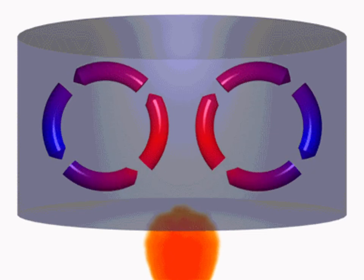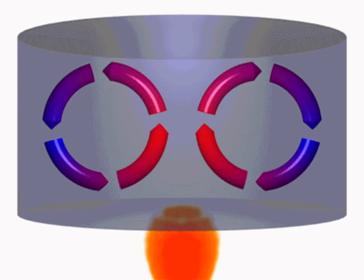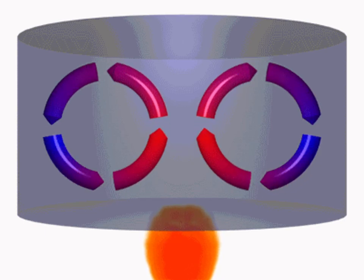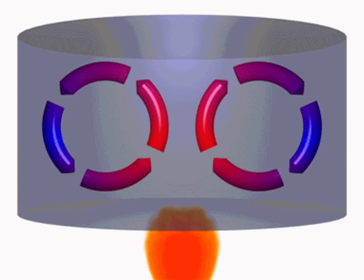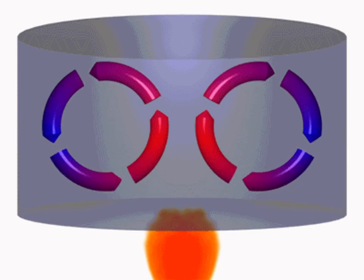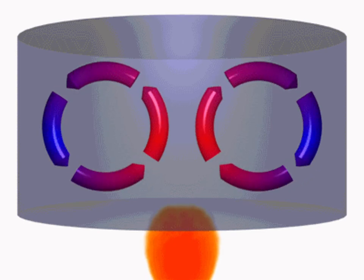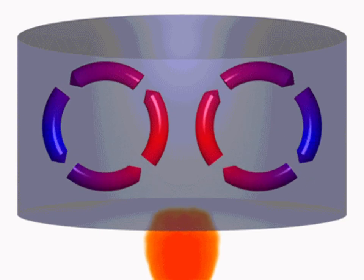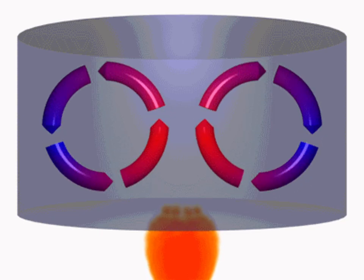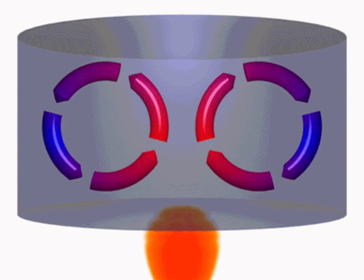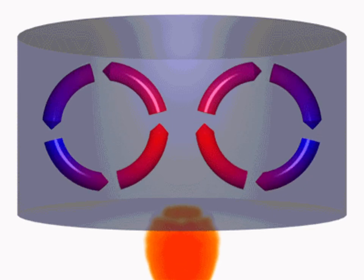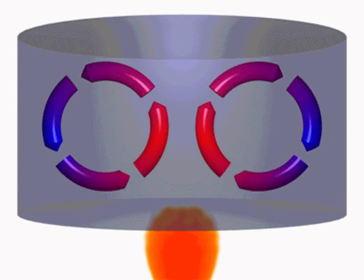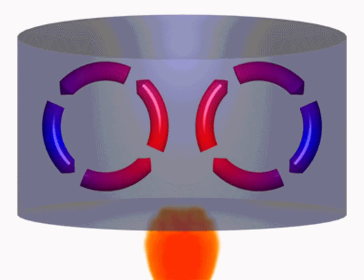Moving on to convection. Convection is the transfer of energy by way of moving molecules in fluids specifically. Fluids include liquids and gases. Convection works because of differences in fluid density. Less dense fluids tend to rise while more dense fluids sink.